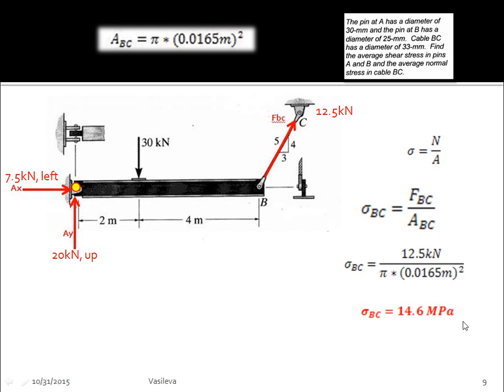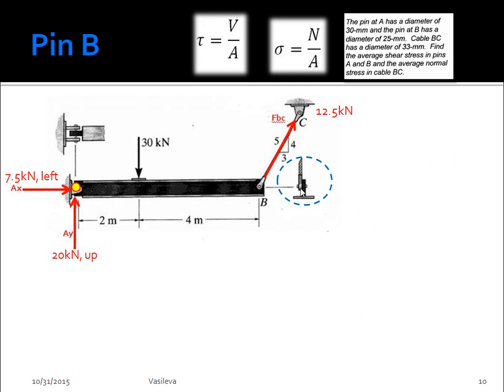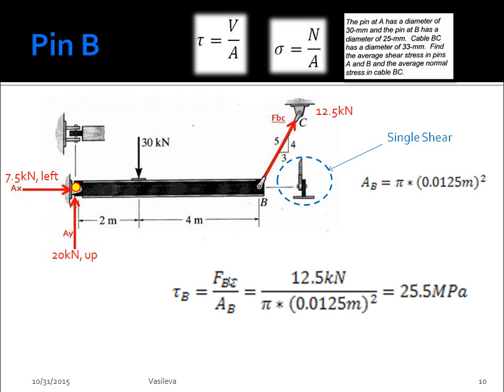The next step is to find the average shear stress in pins A and B. So I started with pin B first. If we look at this, this is a pin that experiences single shear just because the tear is happening only right here and there's only one shear occurring. So that means that it's just V divided by A. So we have the area at pin B and we do FBC divided by the area at pin B and that gives us 25.5 megapascals. Pretty simple because it's single shear and we already know the force.